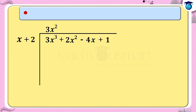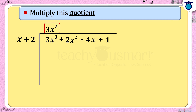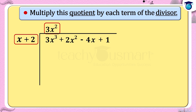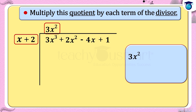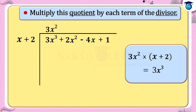Step 3: Multiply this quotient 3x² by each term of the divisor x + 2. That is 3x² × (x + 2) = 3x³ + 6x².